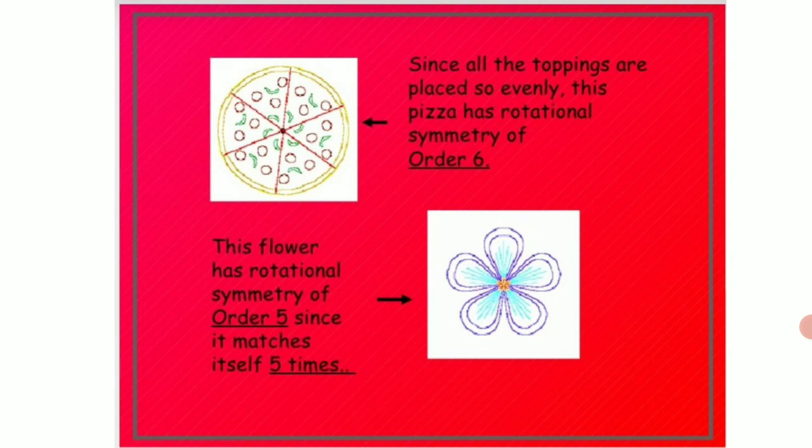Now in the next slide children here you can see the picture of a pizza given which is divided into 6 slices. Since all the toppings are placed so evenly, this pizza has got rotational symmetry of the order 6. That means it can be rotated 6 times. When it is rotated 6 times, it completely overlaps over itself.